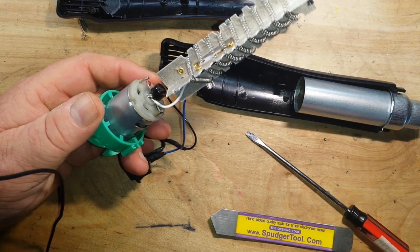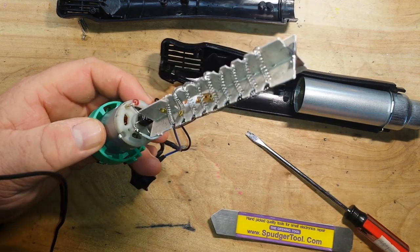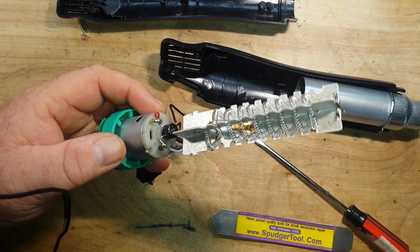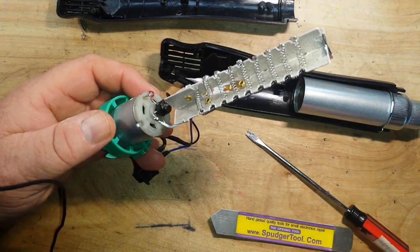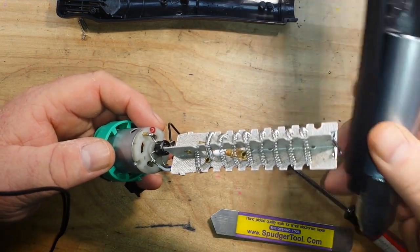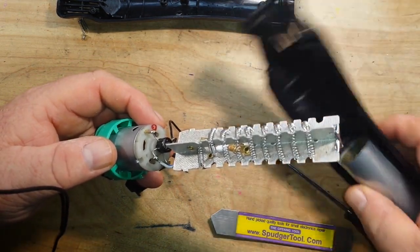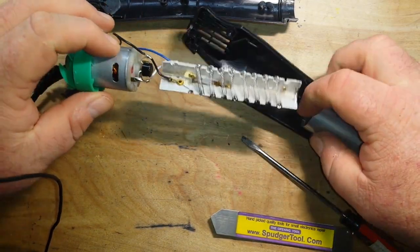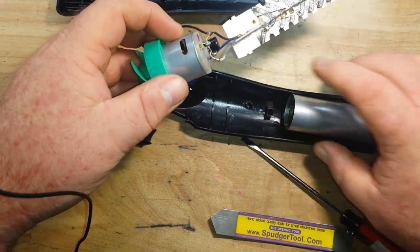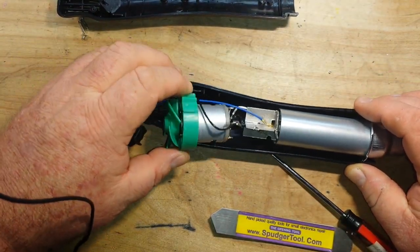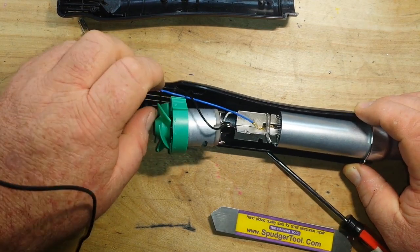Nichrome resistive wire, motor, bridge rectifier, metal tube. Yeah. Welcome to the world's least interesting teardown. I don't know why I expected more.